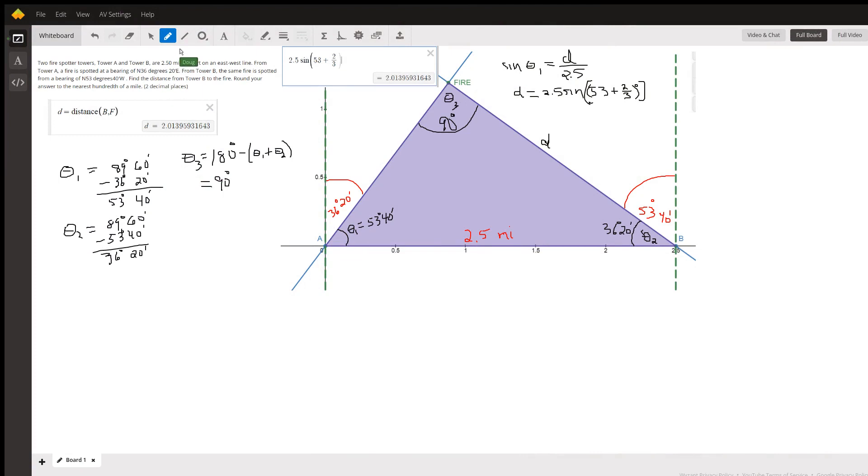Ok, in order to do a problem like this you really do have to draw a diagram and carefully label the given information. So I put tower A at the origin and tower B 2.5 miles to the right.